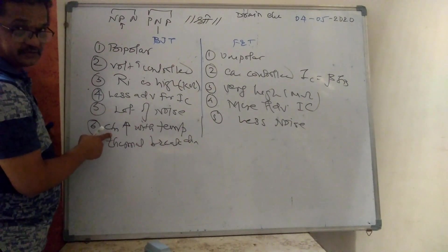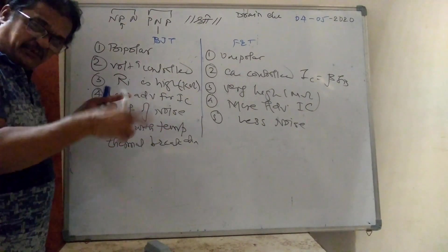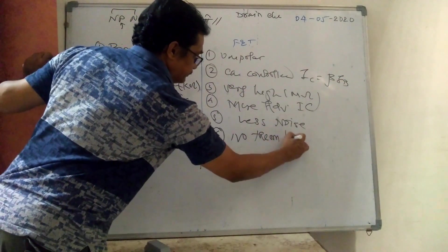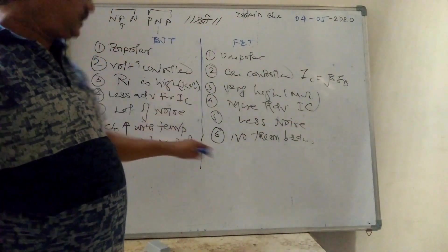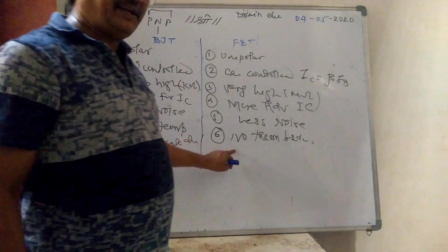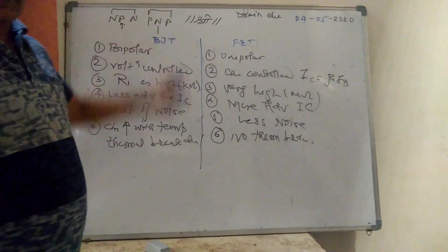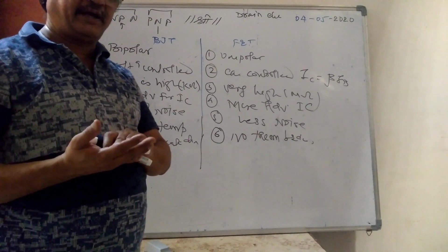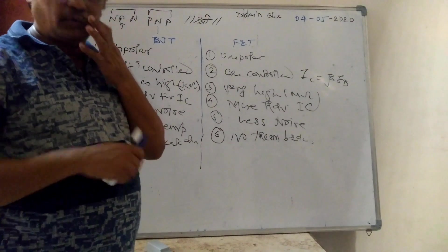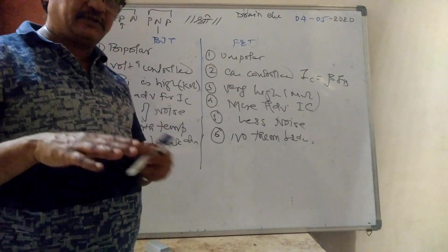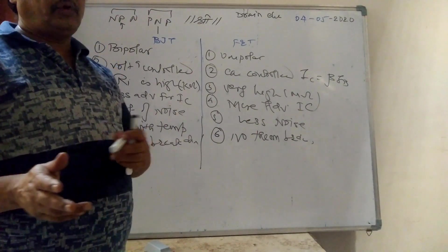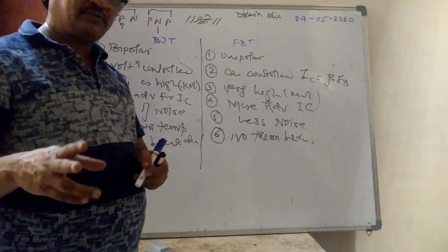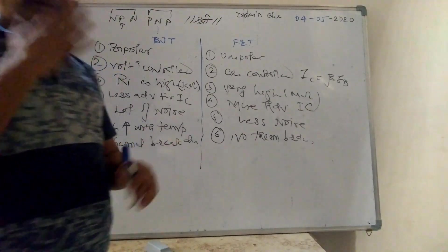With increase in temperature, BJT current increases, so a stage can be reached where due to excessive heating the device may be damaged — that is thermal breakdown. In FET, current decreases with temperature — no thermal breakdown. You have to write these six points when asked to explain the difference between BJT and FET. Working of JFET — construction, working, and VI characteristics — we have studied. You can go through the notes. In the next lecture, we will study MOSFETs. Thank you.